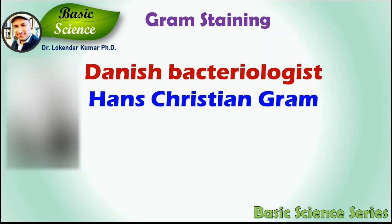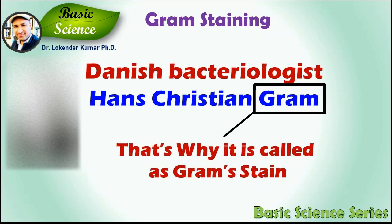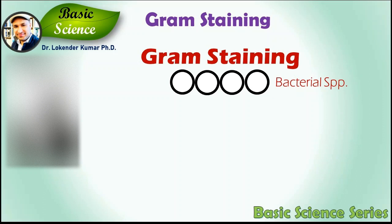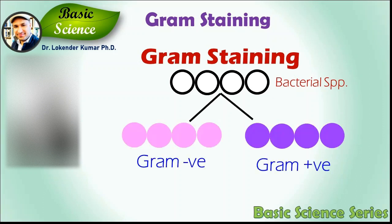The technique was developed by a Danish bacteriologist Hans Christian Gram, and this technique was named as Gram staining to honor his contribution to science. Gram staining, also called Gram's method, is a method of bacterial staining used to distinguish and classify bacterial species into two large groups: gram positive and gram negative.